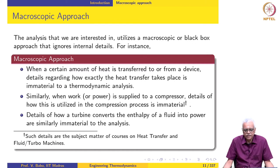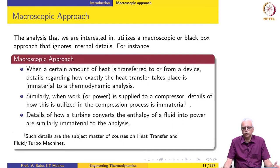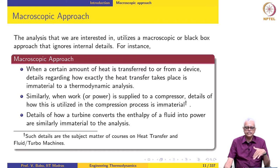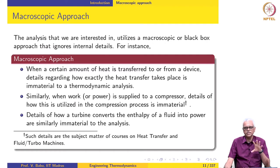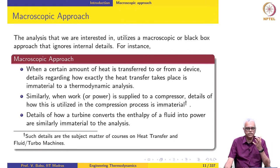As mentioned in the previous lecture, the analysis we are interested in will use a macroscopic or black box approach that ignores internal details. When we say that a certain amount of heat is transferred to or from a device, we do not look at the exact process by which this heat is transferred — whether it is due to conduction, convection, or radiation. We simply say that a certain amount of heat is transferred, and we do not worry about the details.